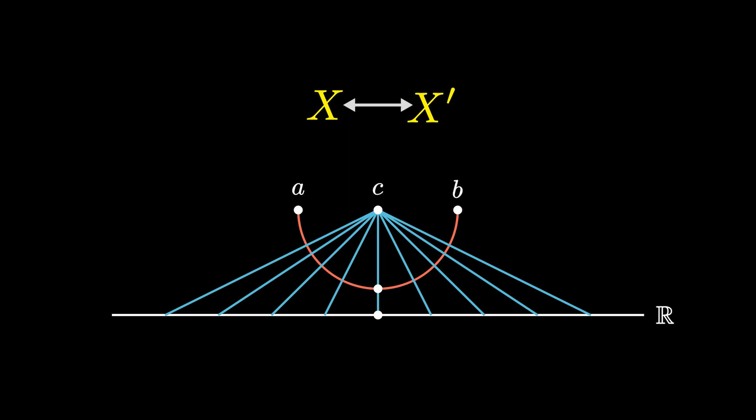Thus, the cardinality of any finite range of real numbers, no matter how small, is equal to the cardinality of all real numbers.